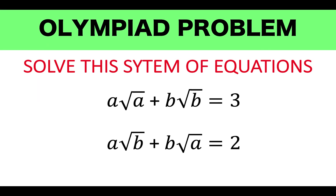Hi everyone, here's our Olympian problem for today. Solve this system of equations. We have two equations here. Equation 1: A times the square root of A plus B times the square root of B equals 3. Equation 2: A times the square root of B plus B times the square root of A is equal to 2.